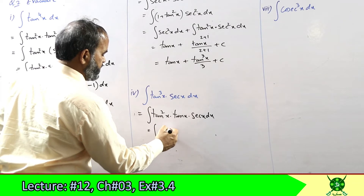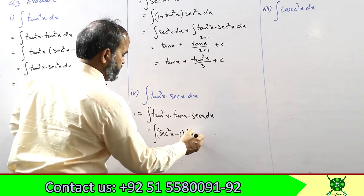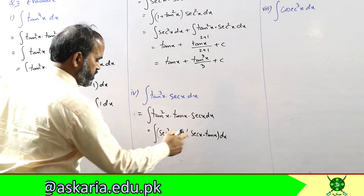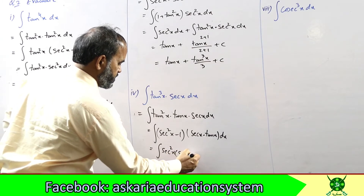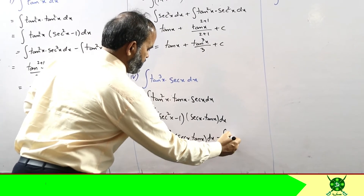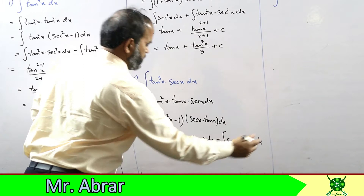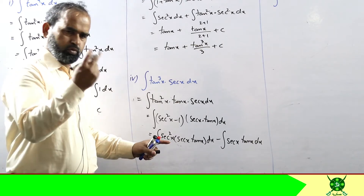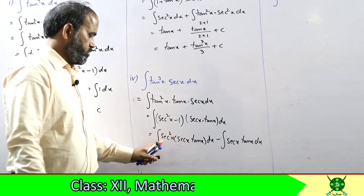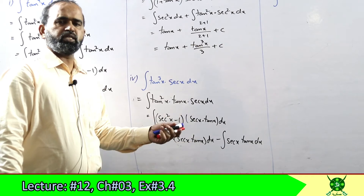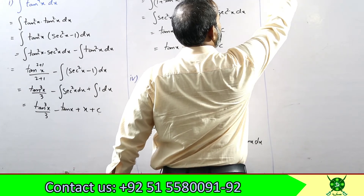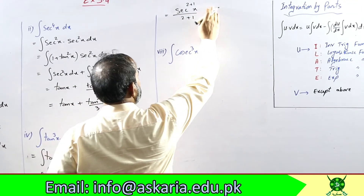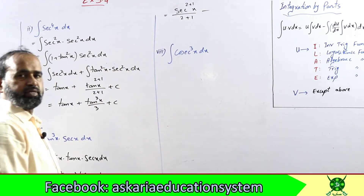Question 2 part four में tan³(x)·sec(x) है। tan²(x) को identity की सूरत में sec²(x) minus 1 लिखते हैं और rearrange करते हैं: sec(x)·tan(x) dx। multiply करने पर sec²(x) into sec(x)·tan(x) dx और minus 1 से sec(x)·tan(x) dx। यहां sec function है जिसकी power 2 है और sec का derivative sec(x)·tan(x) साथ दिया है। तो power में 1 add होगा: sec³(x)/3 minus sec(x) का derivative sec(x)·tan(x) है।